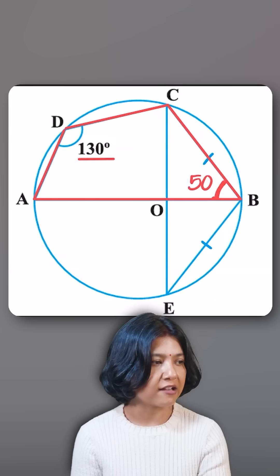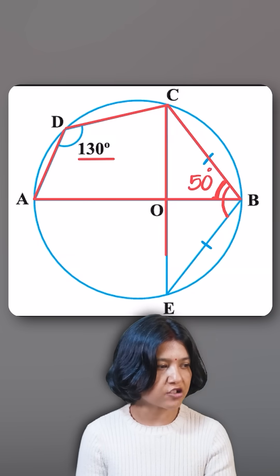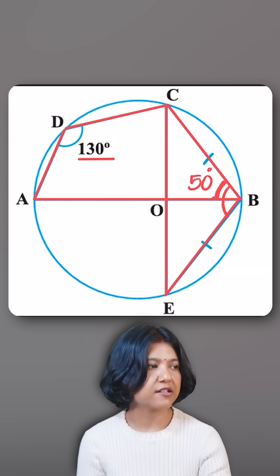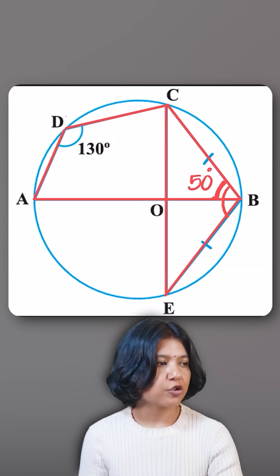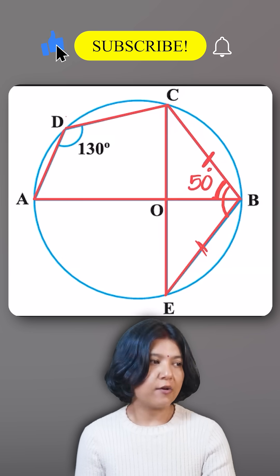So I know this angle is 50. I'm supposed to find the whole angle here. Now if you look at these two triangles - triangle BCO and EBO - note that they have told you the chord BC is equal to the chord BE. When two chords are equal...